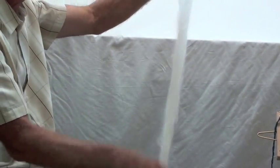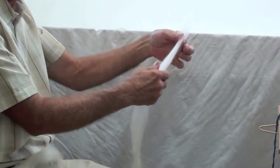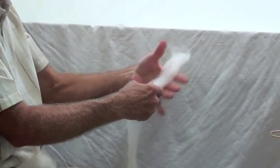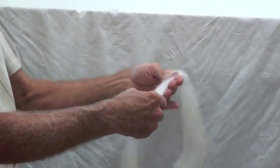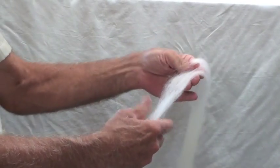The yarn I get peels off in strips like this. I separate it in half and then pre-draft it a little bit, kind of stretch it apart. It's called pre-drafting.